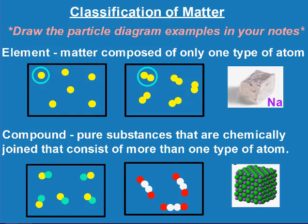Compounds have one type of particle but different types of atoms. On both examples shown, there are two types of atoms but only one type of particle. So these are both examples of compounds — they're pure substances, meaning I can only circle one type of particle that chemically joins and consists of more than one type of atom.